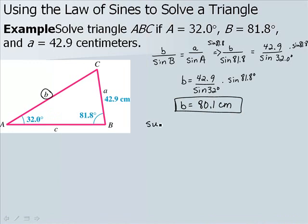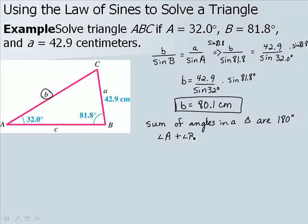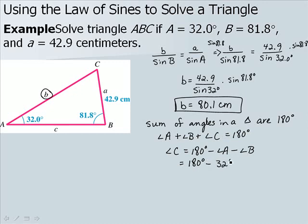Now, we know that the sum of the angles in a triangle is 180 degrees. So when we add angle A plus angle B plus angle C, we get 180 degrees. To find angle C, we take 180 degrees minus angle A minus angle B — that's 180 degrees minus 32 degrees minus 81.8 degrees — giving a value for C of 66.2 degrees.